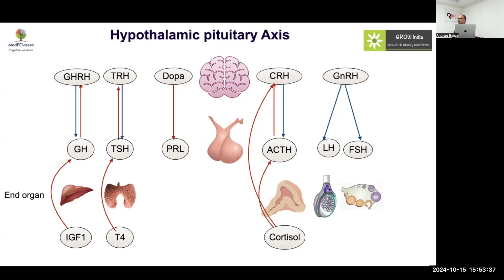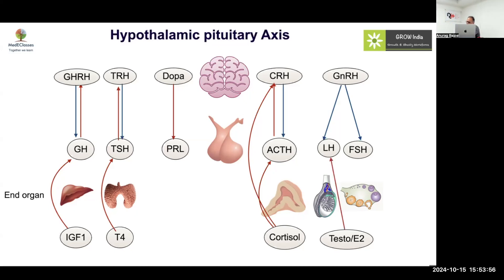LH and FSH regulate the ovaries and testes. LH regulates the Leydig cell and the theca cell; FSH regulates the Sertoli cells and the granulosa cell to produce testosterone, estrogen, and sperm — among other things. Testosterone and estrogen provide negative feedback to inhibit LH — that is the basic mechanism.